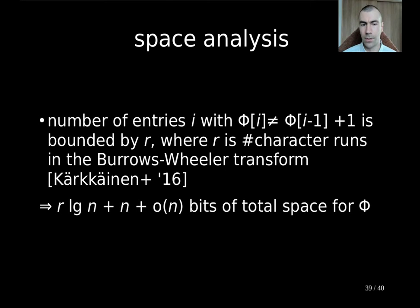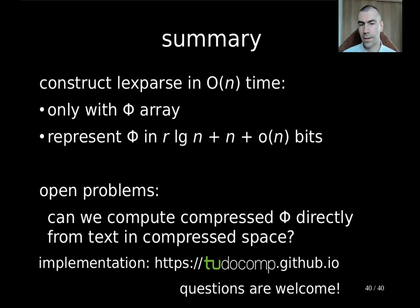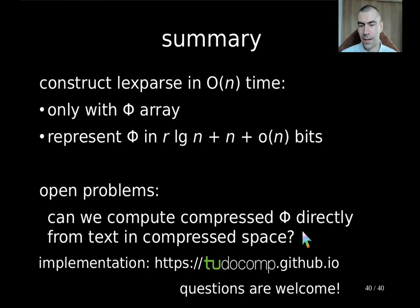In summary, we can construct the LexParse in linear time just by using the phi array, and we have seen that the phi array has a compressed version using r log n plus n plus small order of n bits. The open problem is: can we construct this compressed representation directly from the text within compressed space? Our implementations are available in the TuToComp framework available under the provided homepage. Thanks for listening and any questions are always welcome.